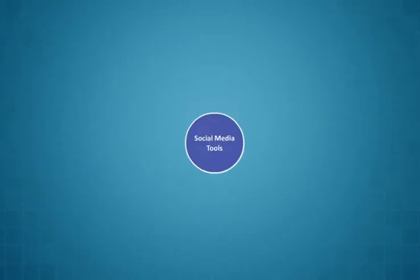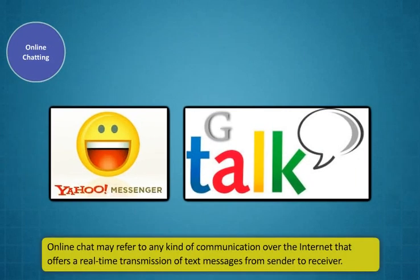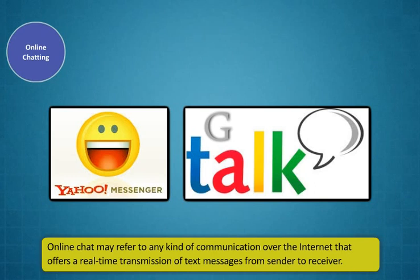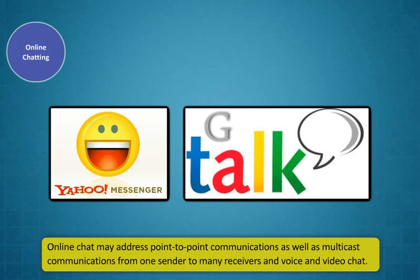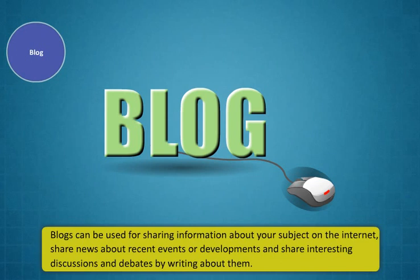The types of social media tools are: online chatting, blog and social networking. Online chat may refer to any kind of communication over the internet that offers a real-time transmission of text messages from sender to receiver. Online chat may address point-to-point communications as well as multicast communications from one sender to many receivers, and voice and video chat. Examples are Yahoo Messenger and gtalk. Blog is an online journal kept by an individual, group or organization. Blogs can be used for sharing information about your subject on the internet, sharing news about recent events or developments, and sharing interesting discussions and debates.